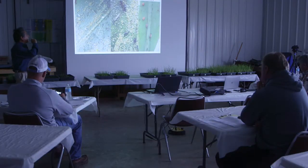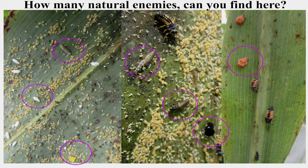I want you to see this picture and let me know how many natural enemies you find there. Natural enemies are insects, but they can be even fungi or bacteria that attack and affect some pests.